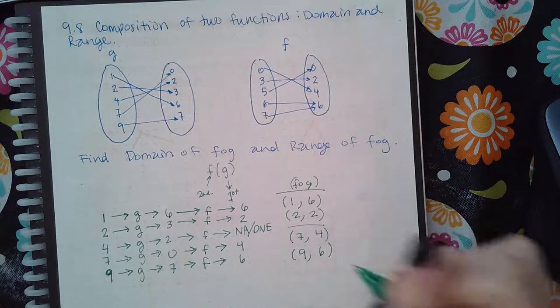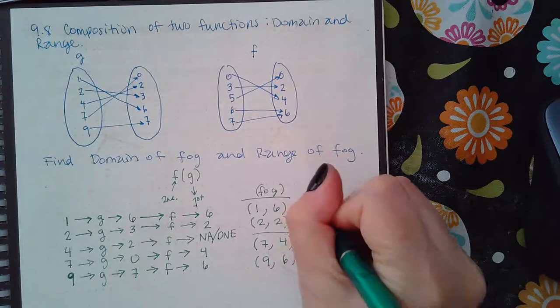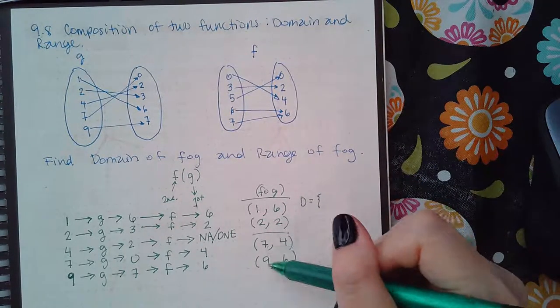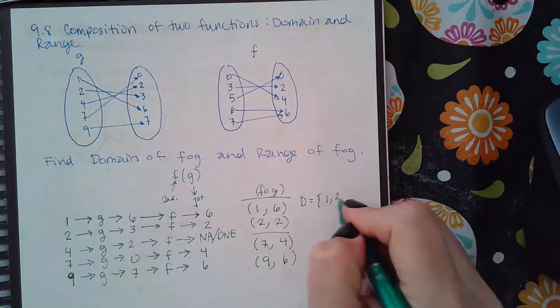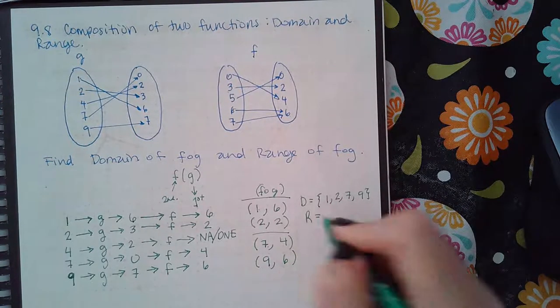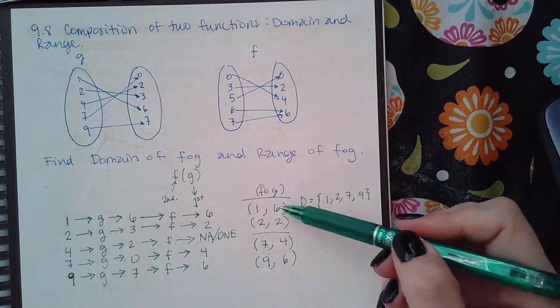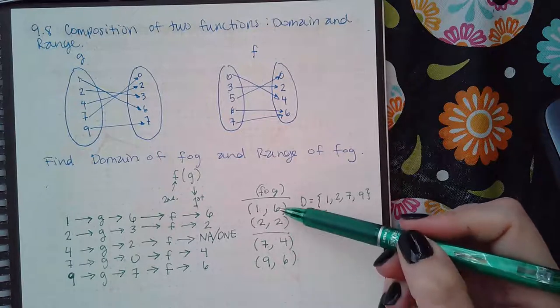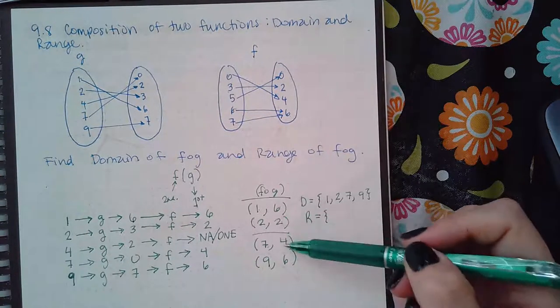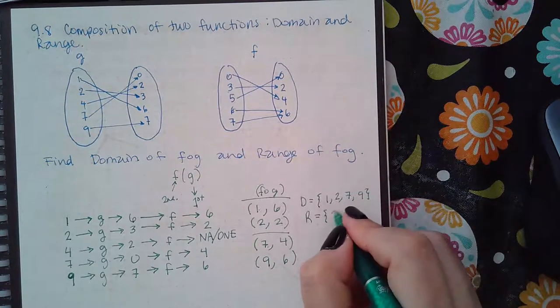Now when we go to figure out domain, we're just listing all the different x coordinates which are one, two, seven, and nine. For the range we're listing all the different y coordinates which are six, two, and four. You notice I said the different y coordinates, this is not different from the first six, so you don't need to repeat the six twice. And normally we like to write them in order, so two, four, and then six.